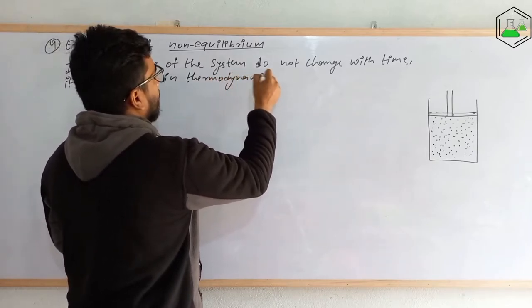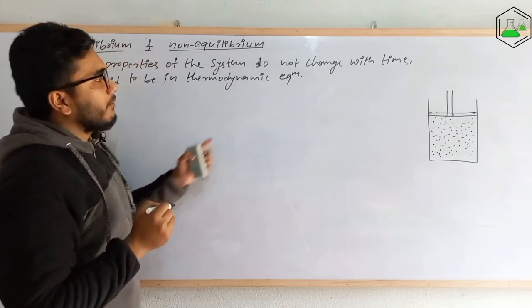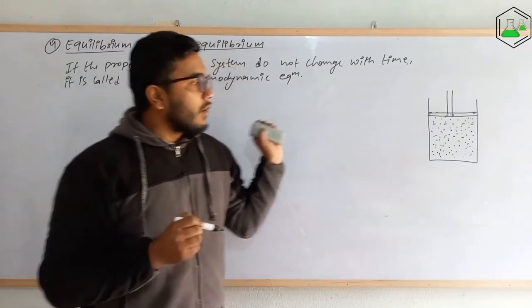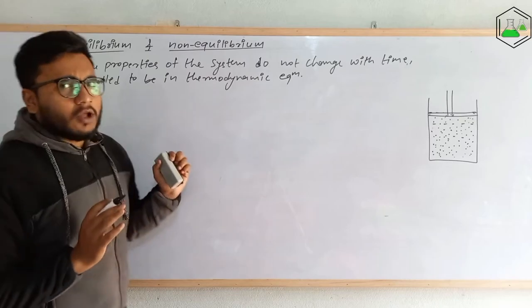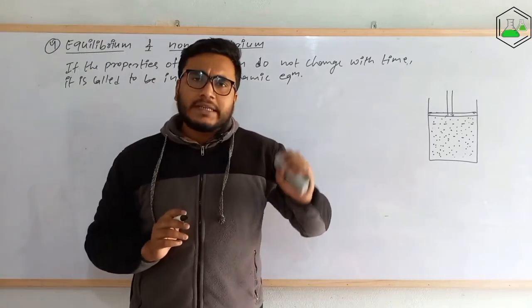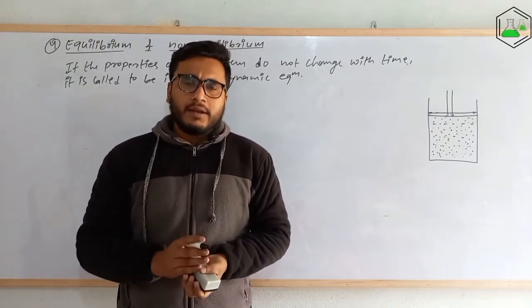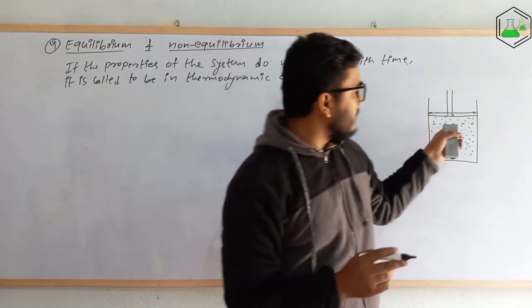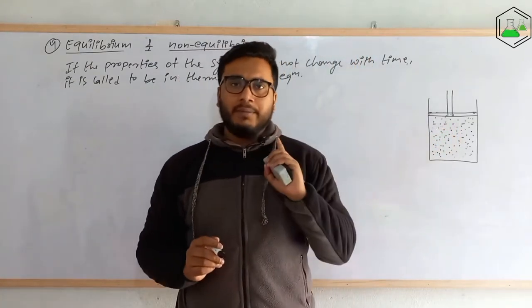So thermodynamic equilibrium — I write equilibrium as EQM — means the properties of the system do not change with time. For a system to be in thermodynamic equilibrium, it must satisfy three criteria.